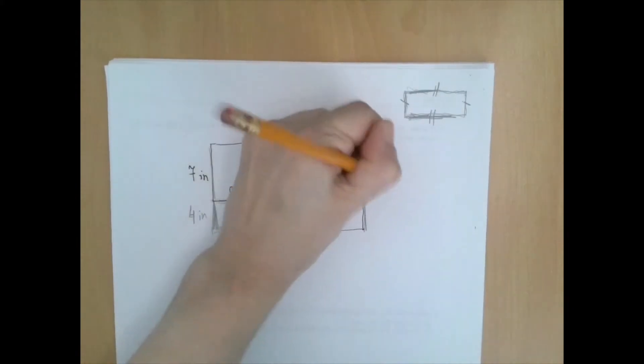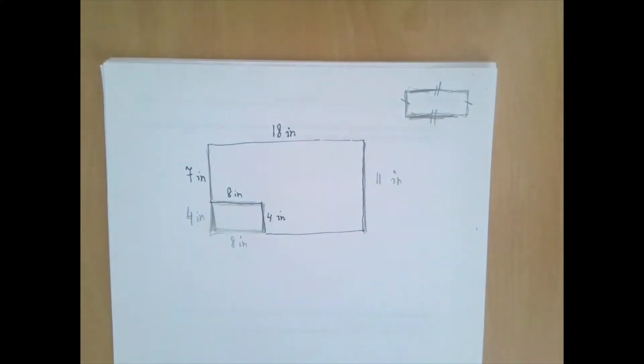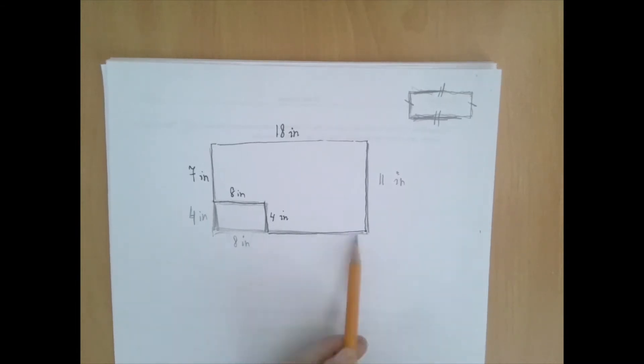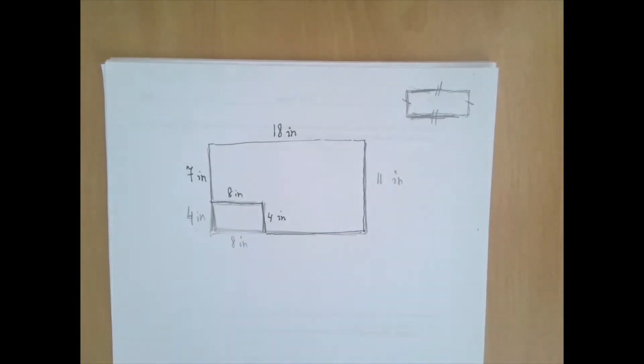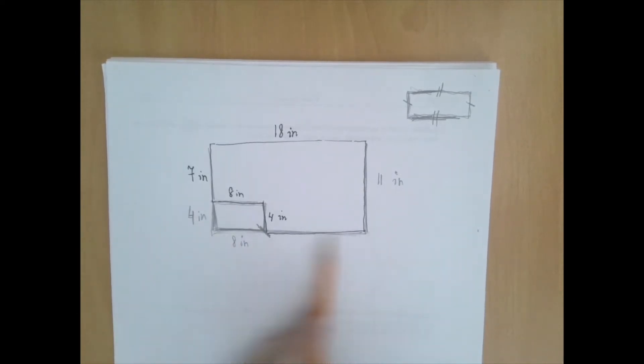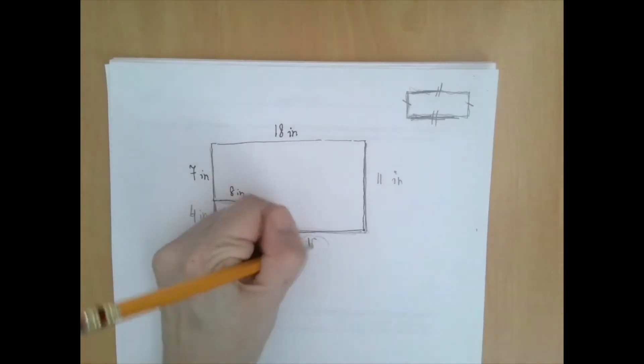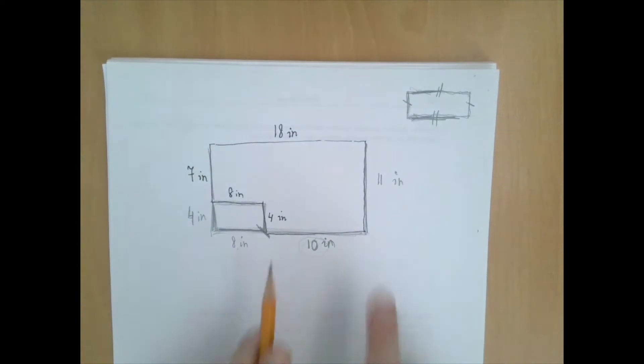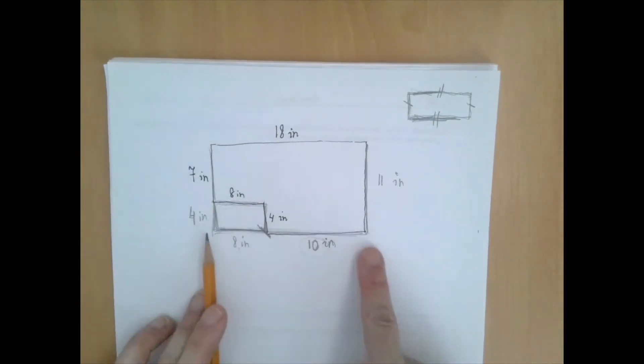So this one here is 11 inches long. And very similarly, for this other side, what do we know? We know that this here is 8 inches. And we know that this whole thing is 18 inches. So what do we have to add to 8 inches to get to 18 inches? That is a subtraction question. So this side here is 10 inches long, right? Because 10 plus 8 will give us 18.